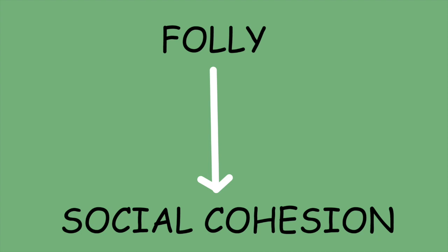So this is kind of what I meant at the beginning of this video when I said that folly contributes to social cohesion. Because if we understand society to be made up of these smaller relationships, and if we accept the position that folly contributes to maintaining these relationships, then folly in turn contributes to maintaining society.